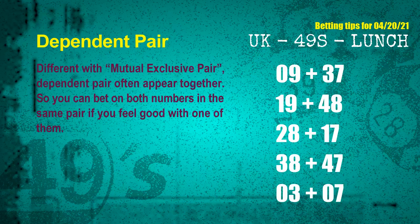Some numbers in a dependent pair you can bet on both, because they are often drawn in one draw. The dependent pairs for next draw are: first pair 09 and 37; second pair 19 and 48; third pair 28 and 17; fourth pair 38 and 47; fifth pair 03 and 07.